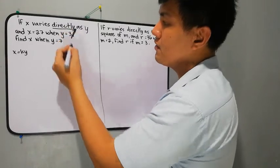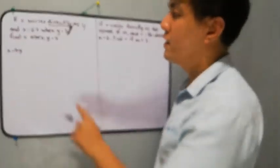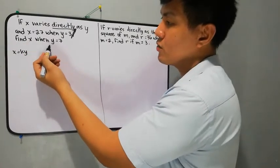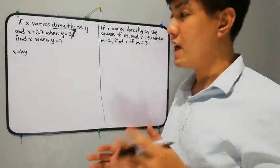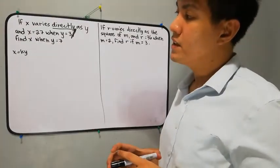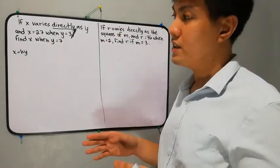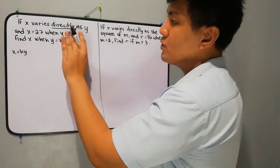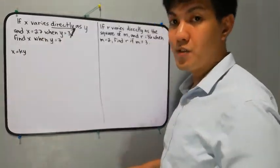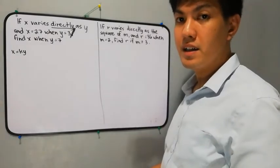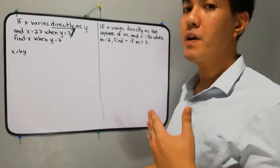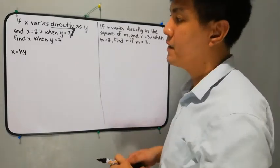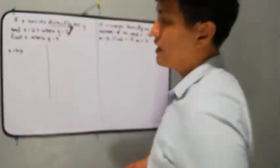The second part will be 'find x when y is 7.' Most of the time, the second part starts with the word 'find.' We're going to solve first the first part of the statement. Remember, the first part of the statement is for solving the constant.